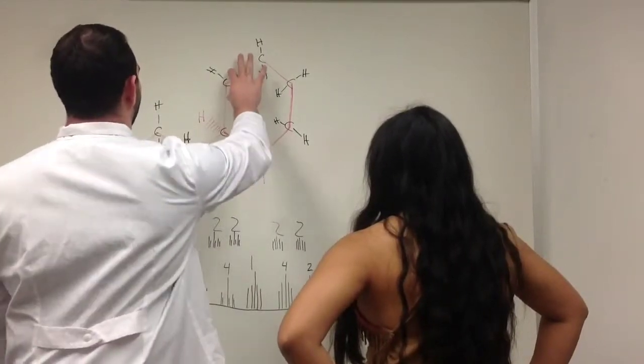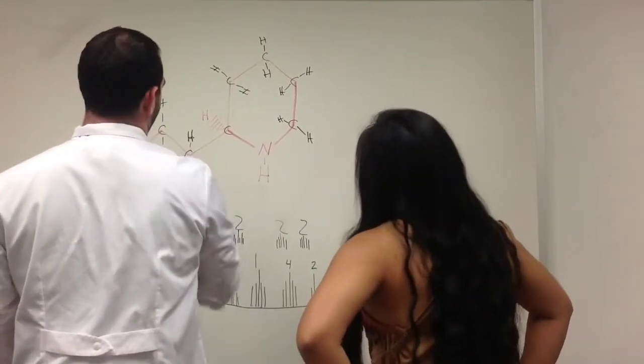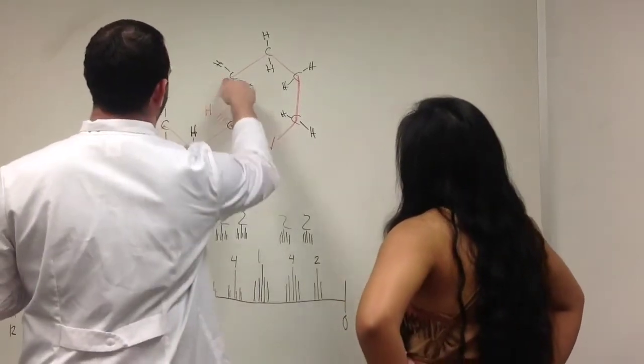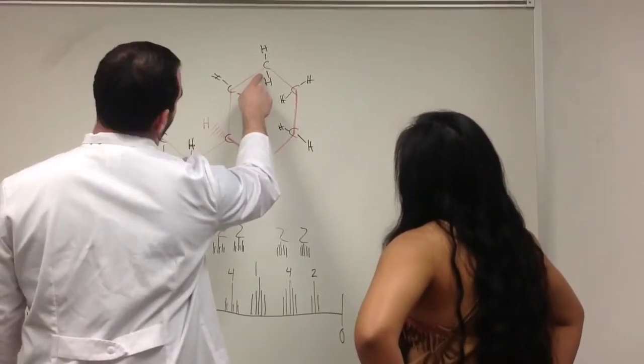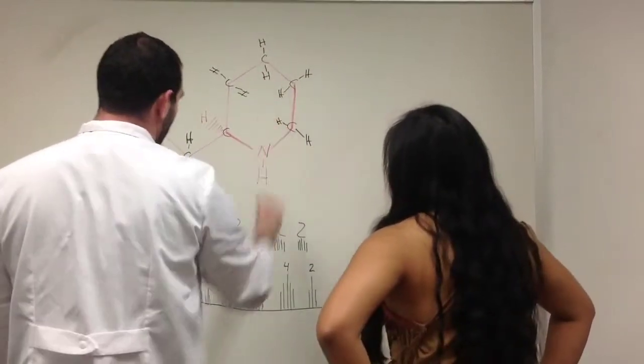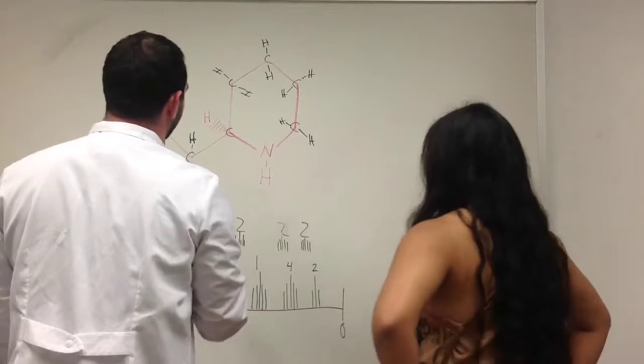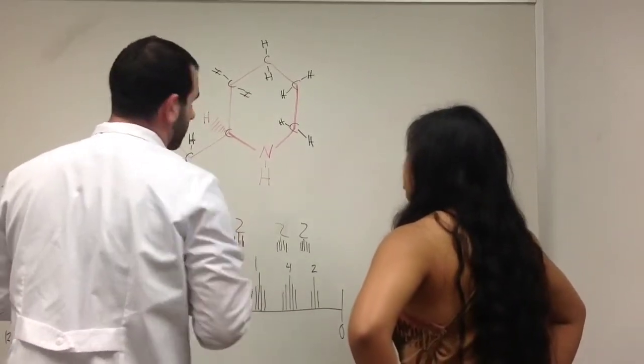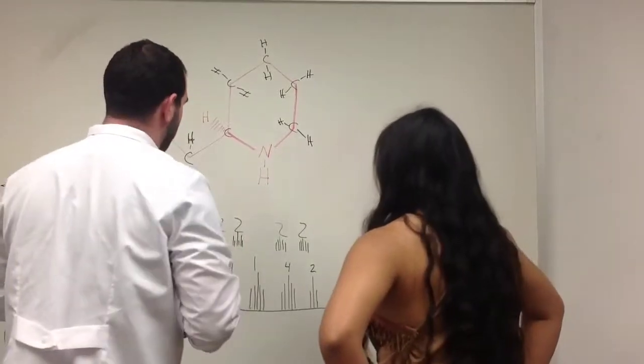Now, since this carbon up here is in the same situation this carbon's in, we're going to do the same exact thing. Taking this carbon, and the carbon directly attached to it, which has 2 hydrogens attached to it, and plus 1 will give us 3, represented by our triplet here. And this center carbon here with the one hydrogen is represented by the singlet, the little lines on each individual.